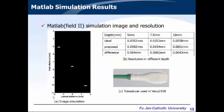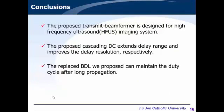This is a manual simulation using Field II. Our design can make the transducer focus on different focal points at 5, 7.5, and 10 millimeters, and the resolution is shown on the right side. In conclusion, the proposed transmitted beamforming is designed for a high-frequency ultrasound imaging system. We use cascading delay cells to achieve wide range and improved delay resolution. The proposed delay line design can maintain duty cycle after long propagation. Thank you for your attention.